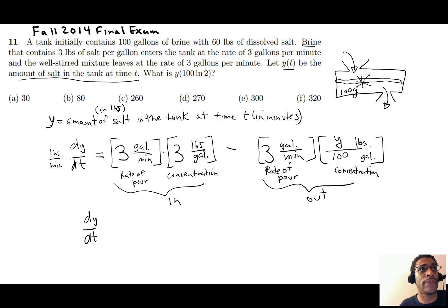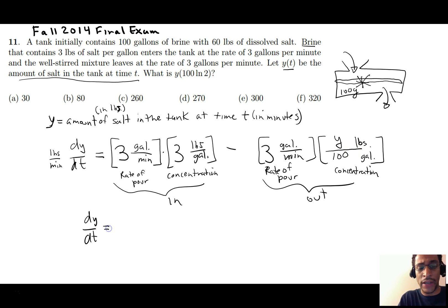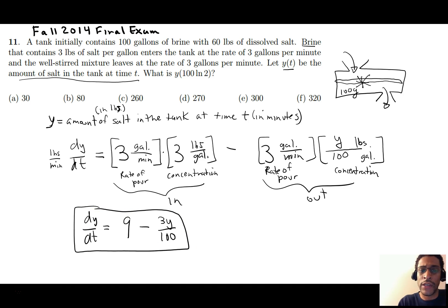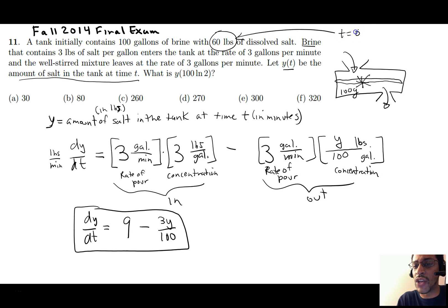When the rate in equals the rate out, the equation ends up separable — it could also be linear. When they differ, it becomes harder to solve and is only linear. So our differential equation is: dy/dt = 9 − (3Y/100). The 60 pounds is the initial condition: when t = 0, Y = 60, which helps us solve for the constant C.